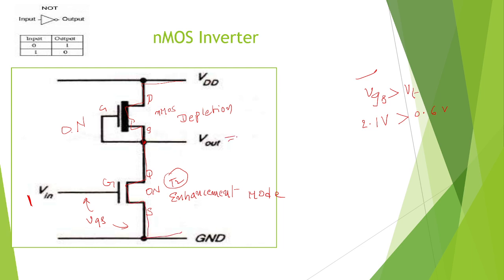Hence there is nothing across the output — output is 0. So while giving input 1, both transistors are in ON condition. Total VDD is grounded, hence the output is 0.